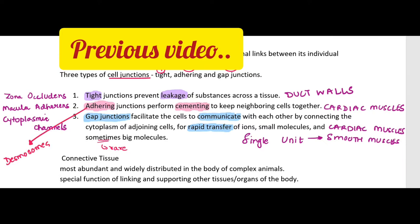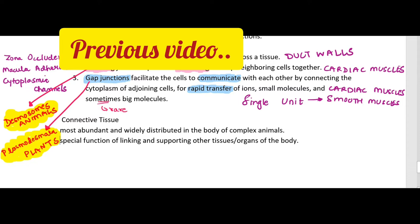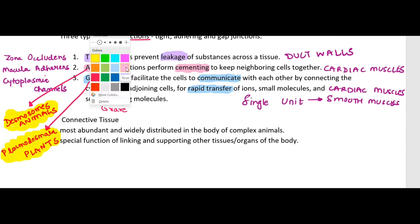Hey guys, welcome back to my YouTube channel Med Edophilia. In our previous video we were discussing structural organization in animals — we covered epithelial tissue and cell junctions. Now let's move on to the most abundant and most widely distributed tissue in the whole body of animals, which is the connective tissue.